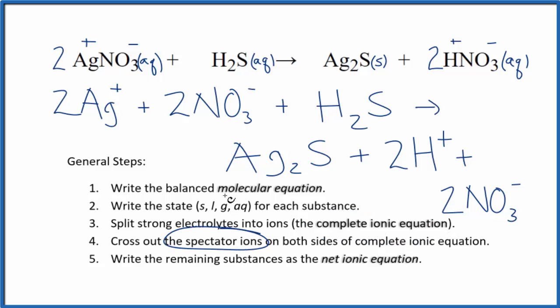Now we cross out these spectator ions. They're on both sides. So I have my reactants here and then my products here. I can see in the reactants I have two nitrate ions and in the products. So these are spectator ions. I can cross these out. But everything else is unique. That makes this the net ionic equation for AgNO3 plus H2S.